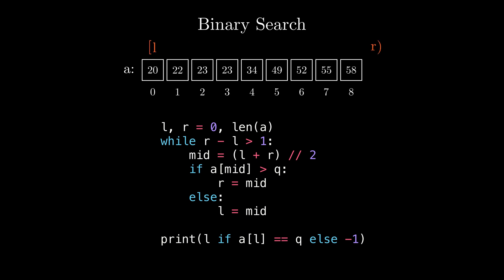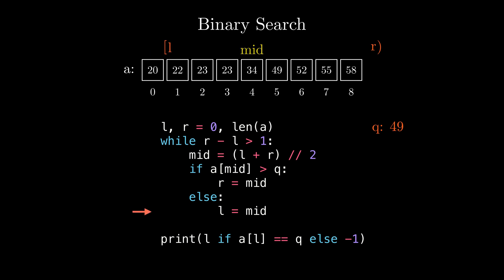Let's run the algorithm and see how it works on a specific example. Given this array, let's see how we would find the number 49. First, we would initialize L to 0 and R to 9. After which we will enter the while loop and would calculate mid to be 0 plus 9 divided by 2, which is 4.5, so we round it down to 4. After that, we will check if 34 is larger than 49. As it's not larger, we will enter the else block and set L to 4.